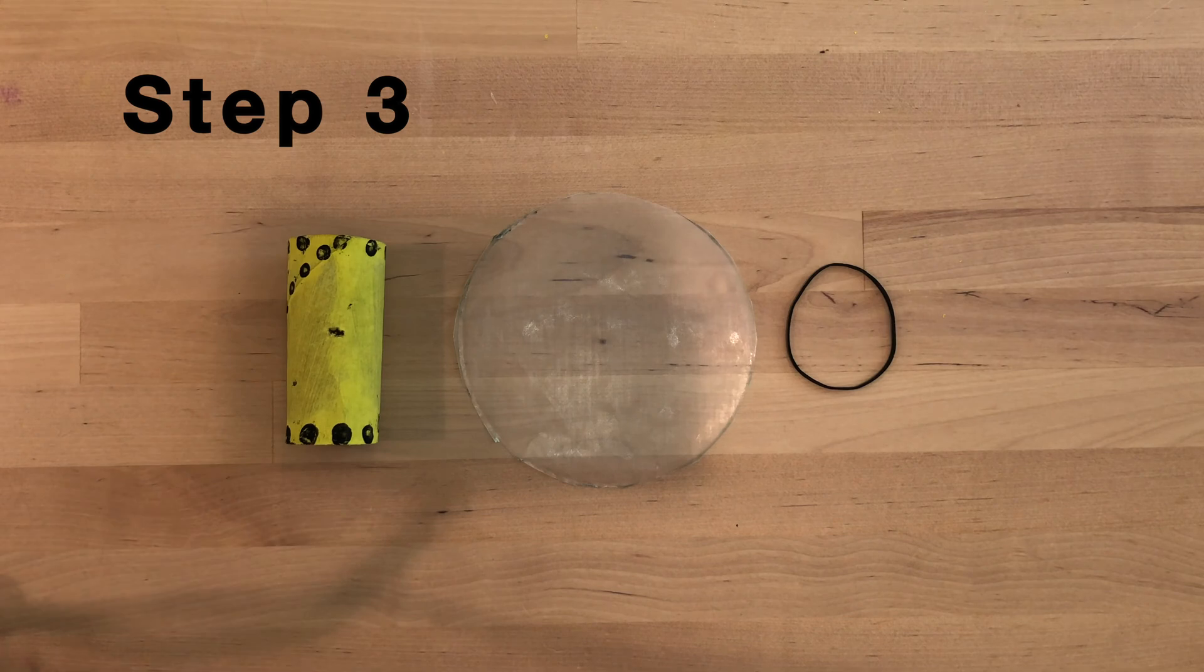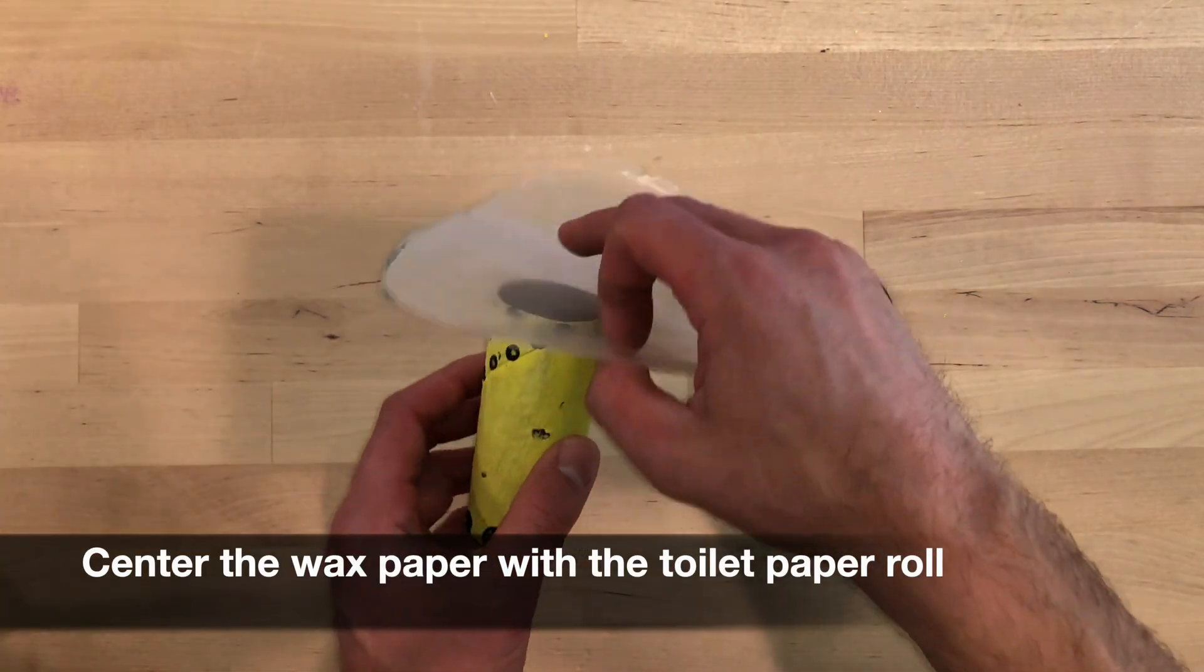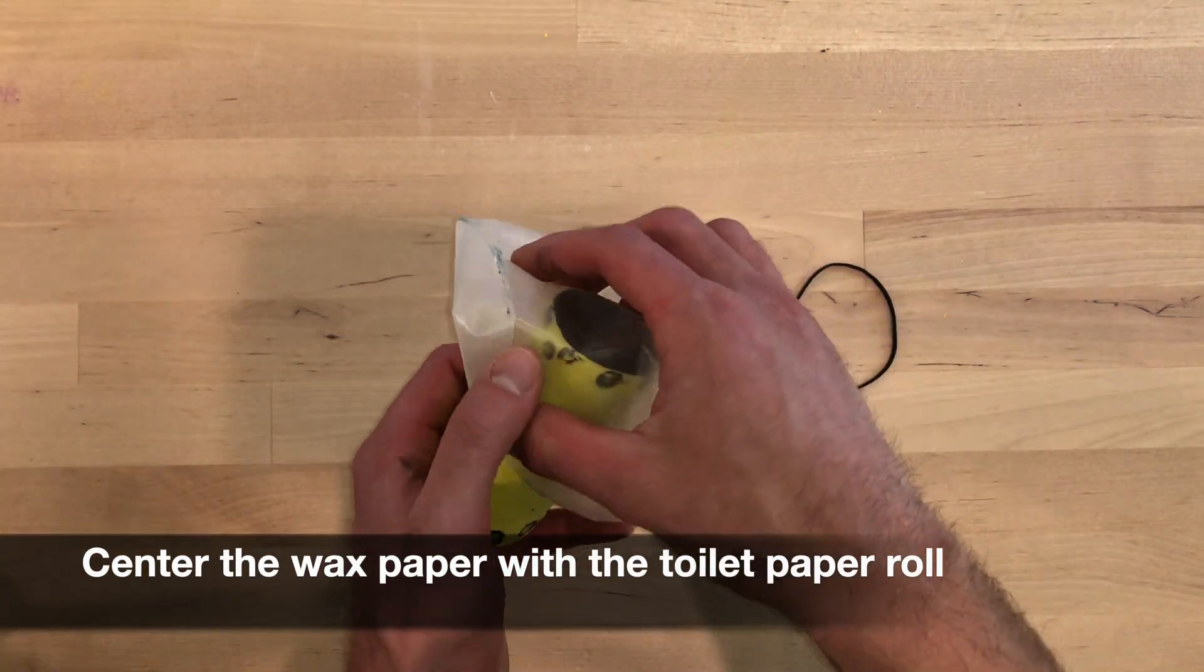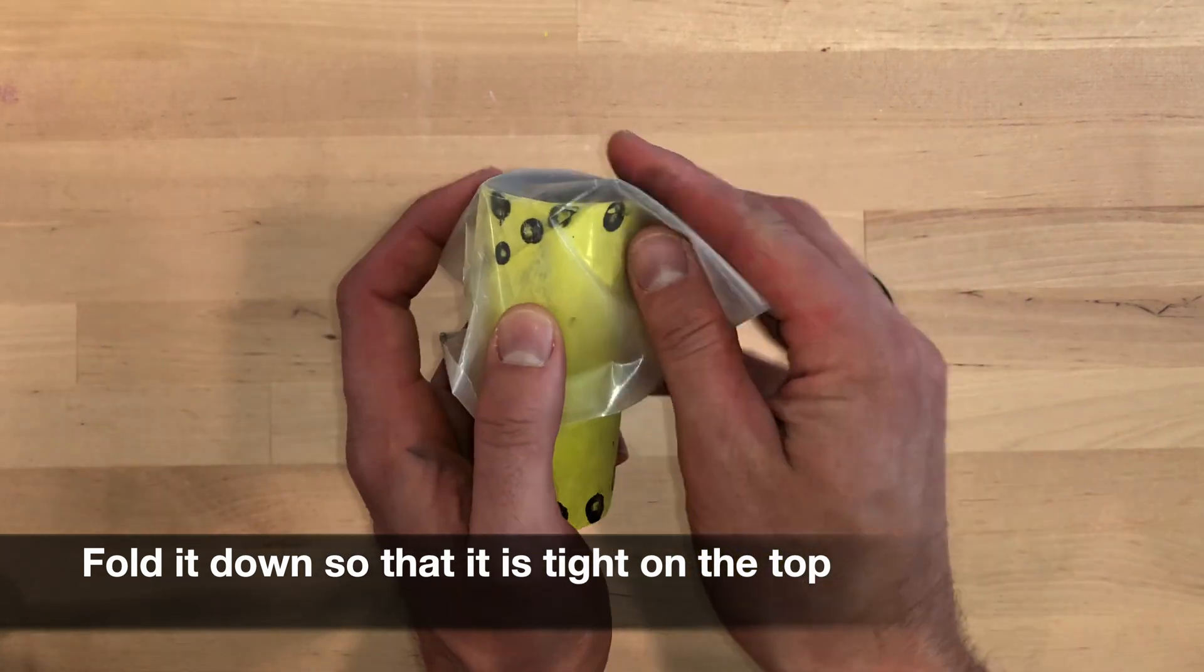Now it's time to assemble our kazoo. Take your wax paper and put it in the center of your toilet paper roll. Fold it down on the sides so that it's nice and tight at the top.